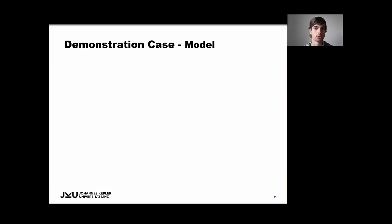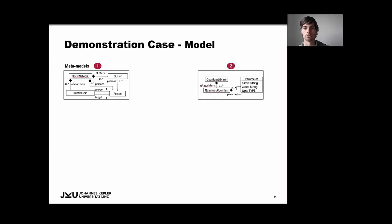So how can we model the demonstration case? As we said, the first step in creating a DSML is to model the problem domain. We have our social network with several people, relationships, and clusters of communities. The second step is to account for the solution space, which is done by this metamodel for quantum algorithms.